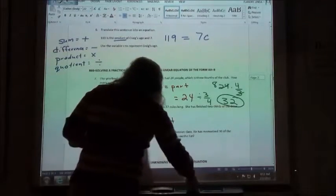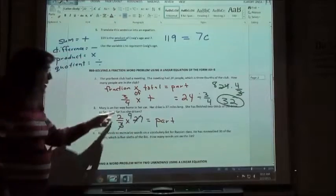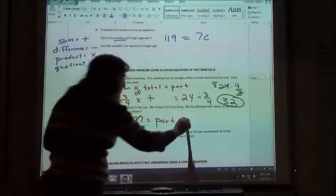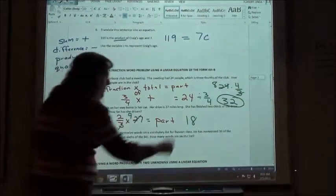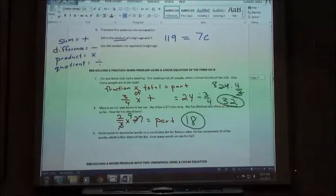And so, again, we can reduce. Three goes into 27 nine times. Two times nine is 18. So she's gone 18 miles out of the 27-mile drive.